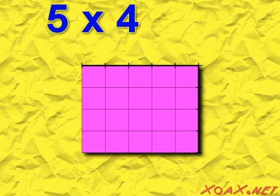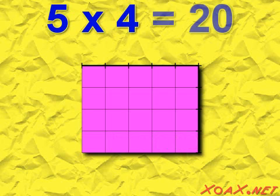we get a region that has an area that is 1, 2, 3, 4, 5, 6, 7, 8, 9, 10, 11, 12, 13, 14, 15, 16, 17, 18, 19, 20 square units. So 5 times 4 equals 20.